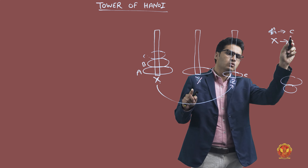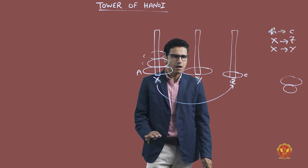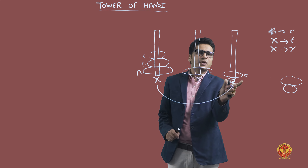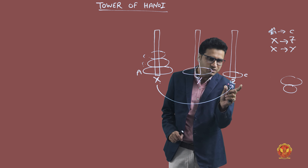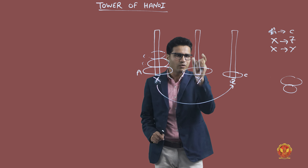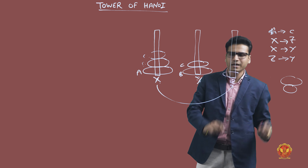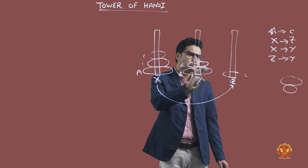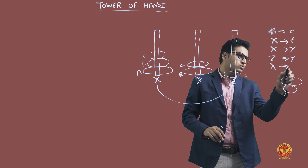So two plates have been moved. The third plate is still on rod X. Now I can shift the plate on Z to Y — yes, because a smaller plate can go on top of a larger plate. So that is movement Z to Y. After that, can I move the large plate from X to Z? Yes, because that rod is empty. So I move the large plate X to Z.